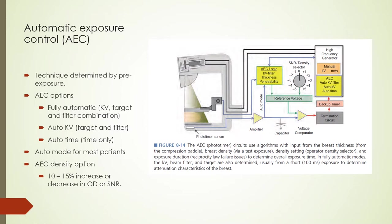An operator has several options for the AEC. These include a fully automatic mode that sets both kV and target and filter combination; an automatic kV acquisition based on a pre-exposure; and an automatic time of exposure method using manually set target, filter combination, and kV values. For most patient imaging, the fully automatic mode is used. Density control steps provide a 10–15% increase or decrease in density from the baseline zero setting for each step. A backup timer can terminate the exposure if there is a malfunction in the AEC system.